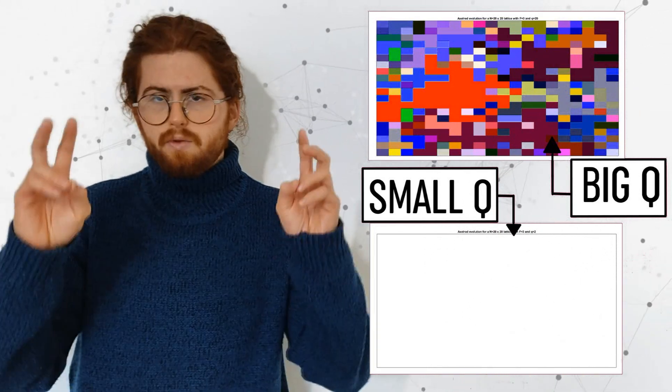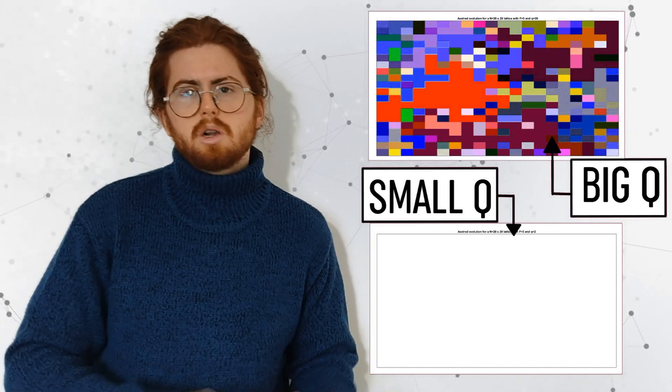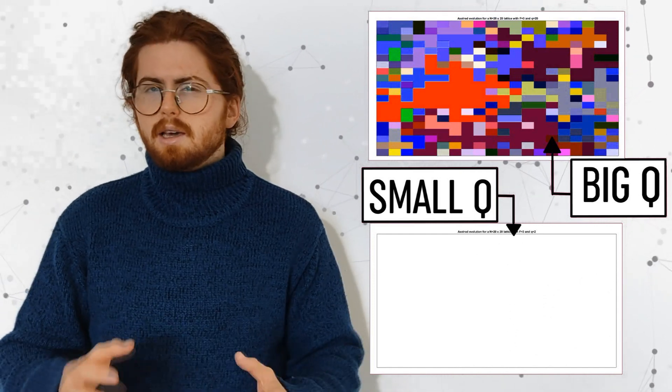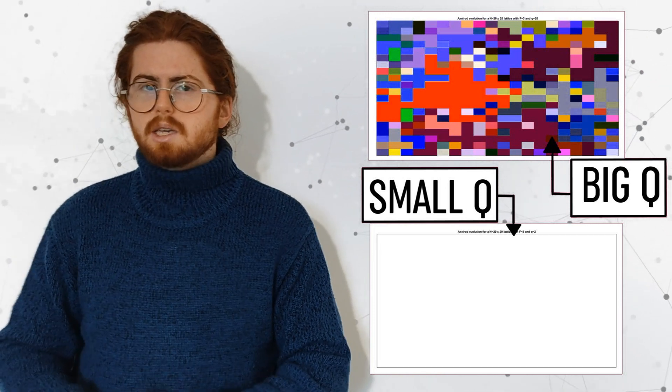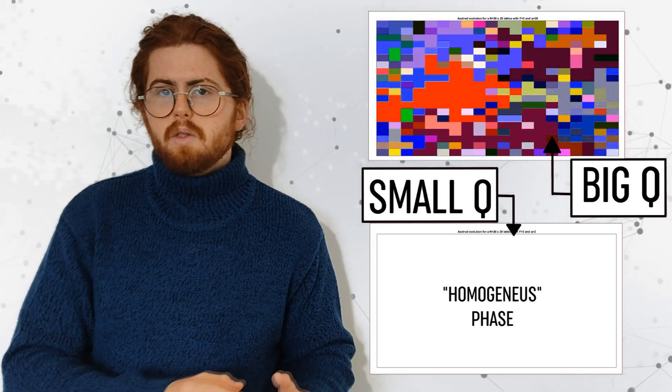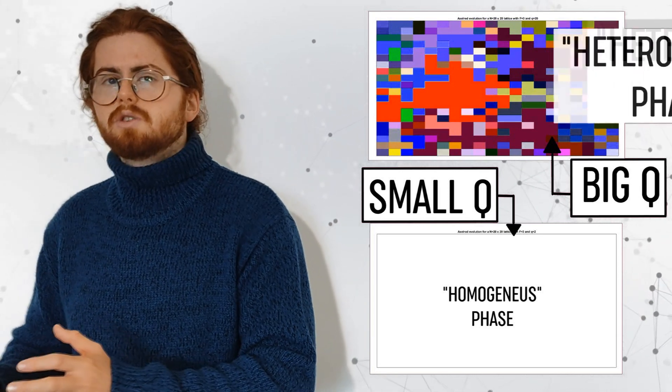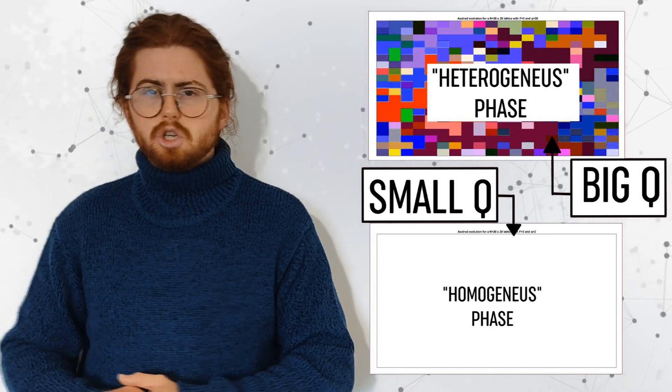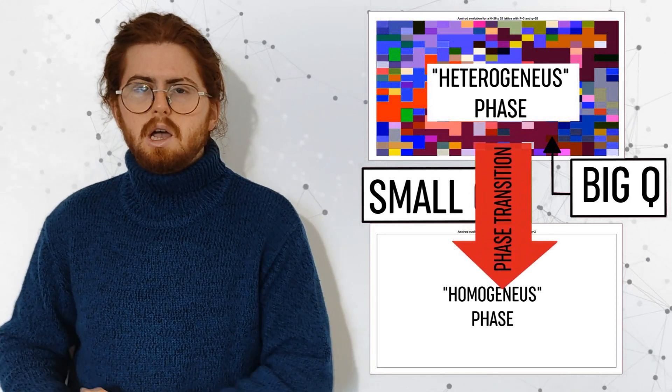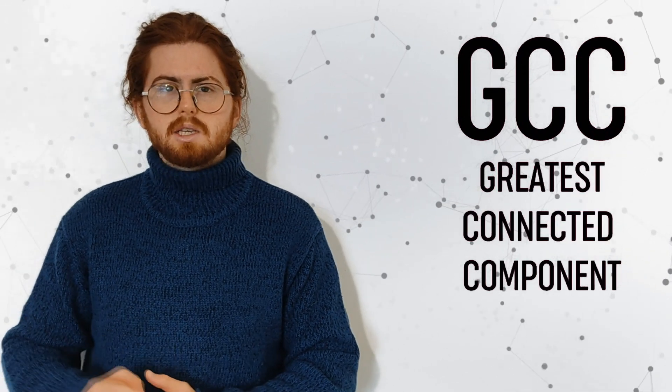Statistical physicists talk about phases when they refer to this intuitive idea of monocultural and multicultural society. Yes, like the gas, solid and liquid phase and all that stuff. They say that for small values of Q, societies are at a homogeneous phase where the monoculture prevails, and on the other hand for big values of Q, societies are at a heterogeneous phase where pluriculture dominates. Thus, if we modify the value of Q, we can talk about the phase transition between a homogeneous phase and a heterogeneous phase. To measure the degree in which a society is multicultural or monocultural, complex scientists use a parameter called GCC, greater connected component, which is the size of the biggest cluster that appears in the system, the size of the biggest homogeneous region.